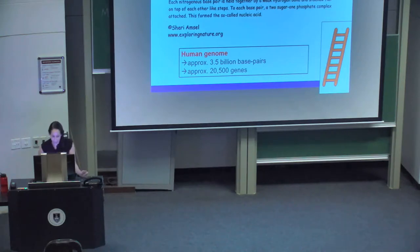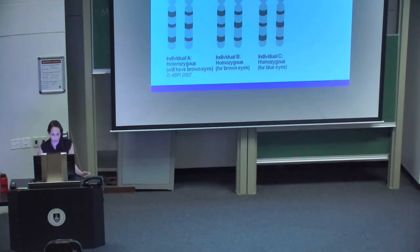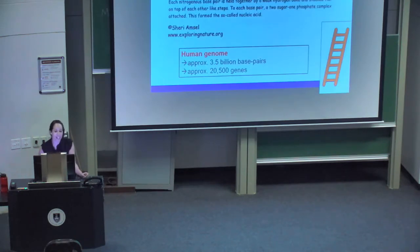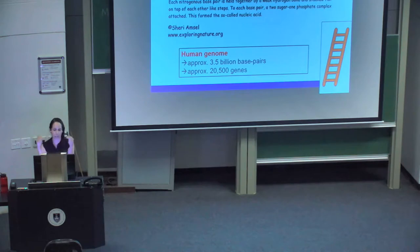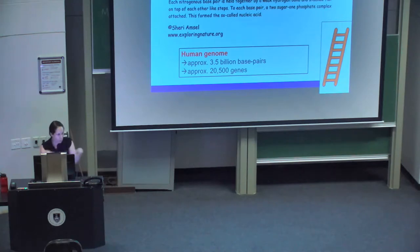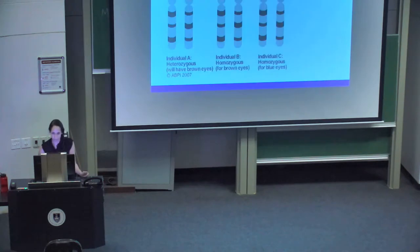Going from a micro to a macro level, there are in fact 3.5 billion base pairs in the human genome — pairs of nitrogenous bases forming the rungs of the ladder — and there are approximately 20,500 genes in the human genome, which are functional sections of the DNA double helix.